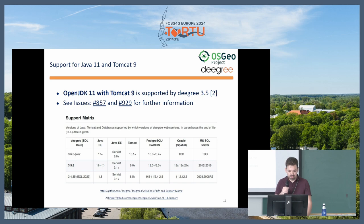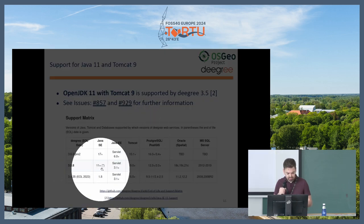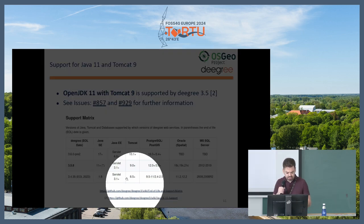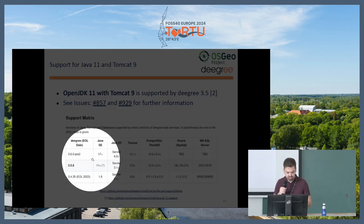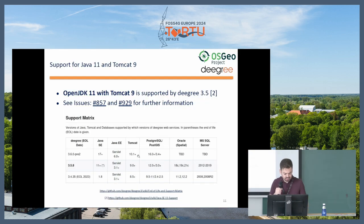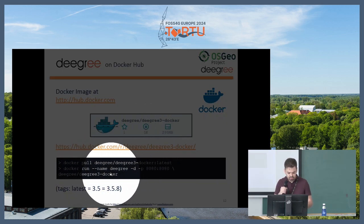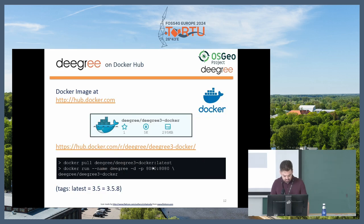A big new thing is that Java 11 and Tomcat 9 are supported by Degree 3.5. Before that it was Java 8 and Tomcat 8.5. In Degree 3.6 we will support Java 17 and Tomcat 10.1. The Docker repository makes it very easy to pull the image — it's just one command to run and start it, and the web service is exposed via port 8080.